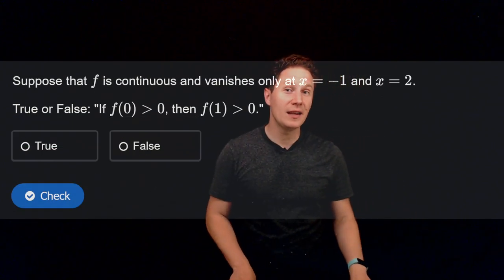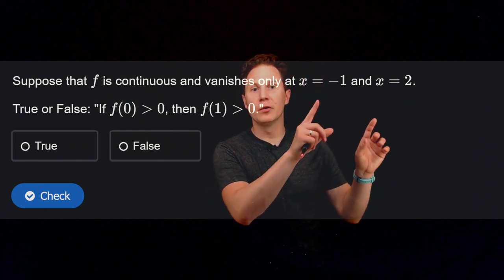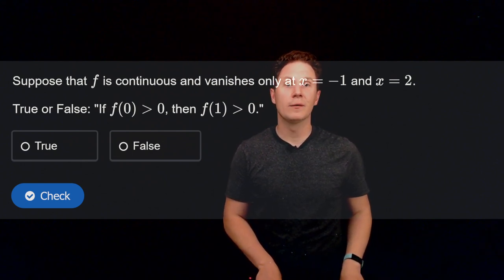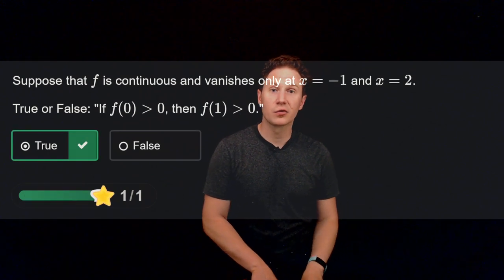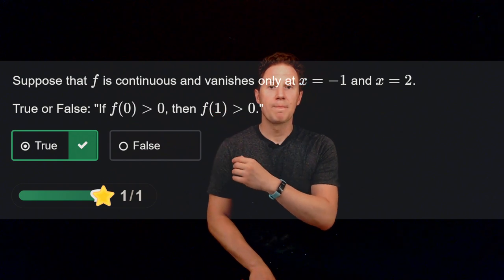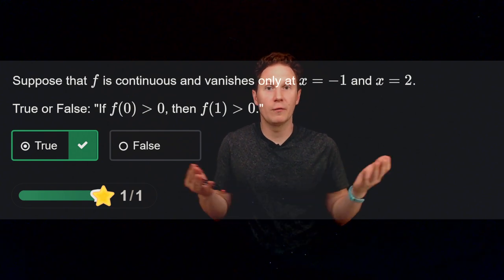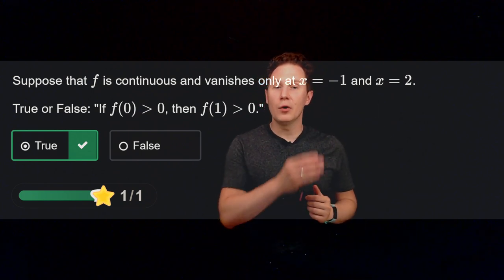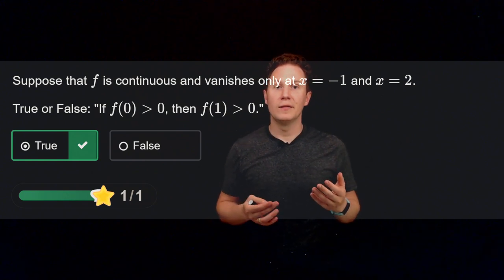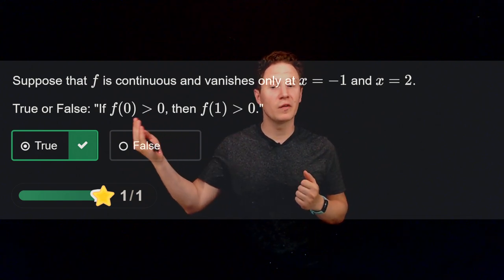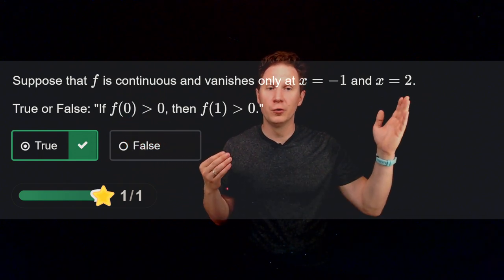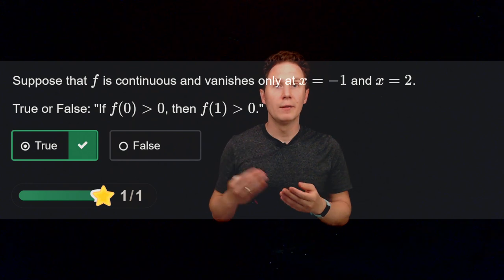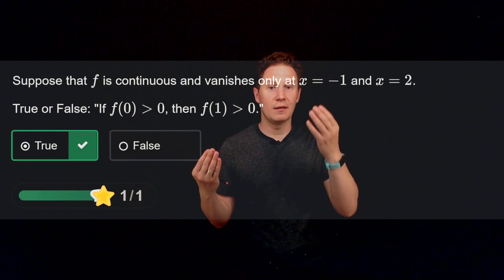Suppose f is continuous and equals zero only at x = 1/2 and x = 2. Is it true or false that if f(0) is positive, then f(1) is also positive? This is true because of the IVT. Since f is continuous everywhere, on any closed interval containing 0 and 1, the function cannot become zero between those points — it already uses up its zeros at x = 1/2 and x = 2. If f(1) were negative, the IVT would force another zero between 0 and 1, which is impossible. So f(1) must be positive.